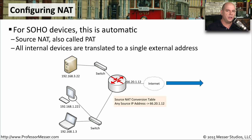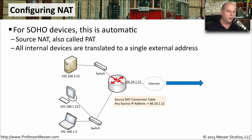One of the things you may have noticed on your wireless network is that all of the devices are getting IP addresses that are private IPs, and they've all been assigned by the DHCP server inside of your wireless SOHO router. These internal IP addresses are not going to be able to communicate on the internet, so in order for your internal devices to communicate to the rest of the world, your wireless router is set up to do Network Address Translation, or NAT.